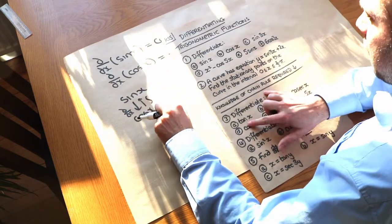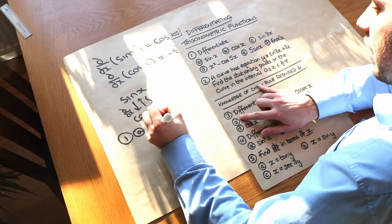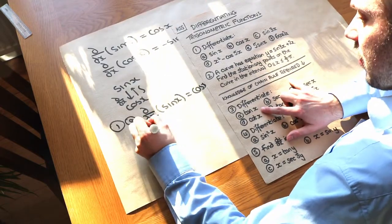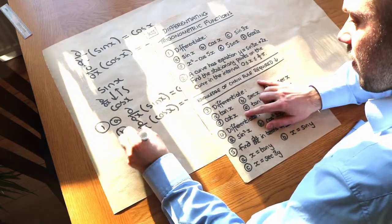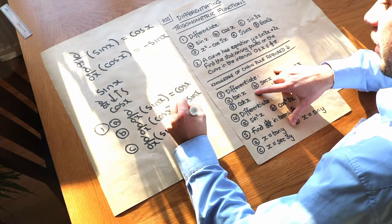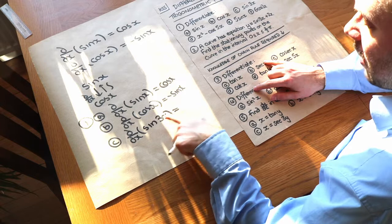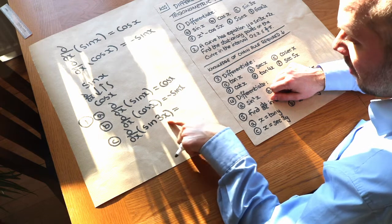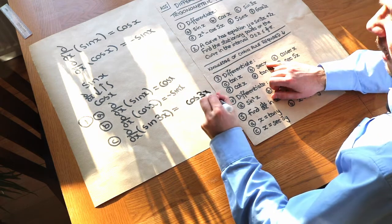Let's use that for the first few questions. Differentiating sine of x gives cos of x. Differentiating cos of x gives minus sine of x. For sine of 3x, there's a standard rule: differentiate normally but multiply by the number in front of x. So we get cos of 3x, times by 3.